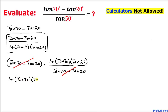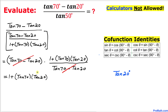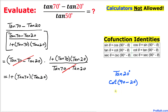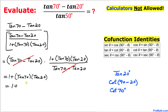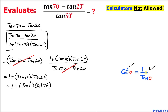Now let's focus on tangent of 20 degrees. By using the co-function identity, tangent of 20 degrees can be written as cotangent of (90 minus 20) degrees, which is cotangent of 70 degrees. So we can replace tangent of 20 degrees with cotangent of 70 degrees in our expression.